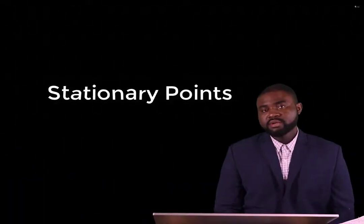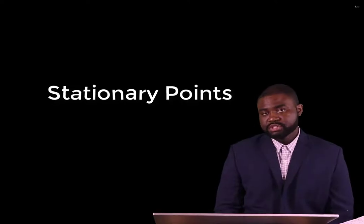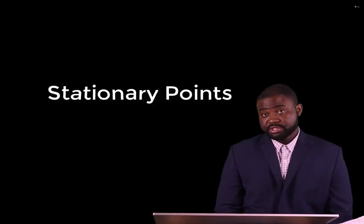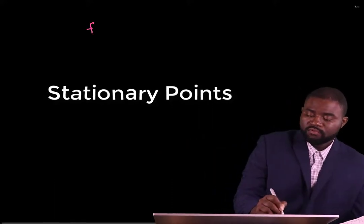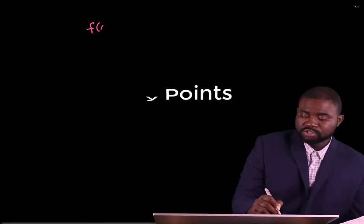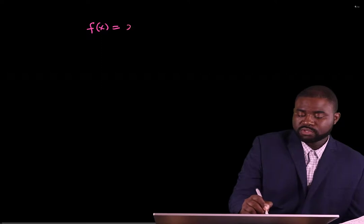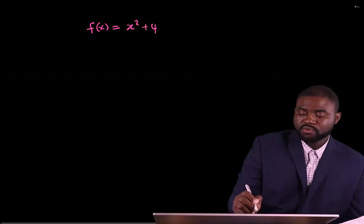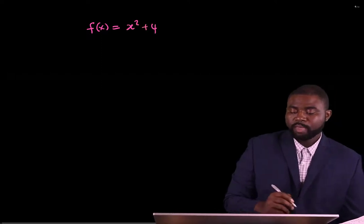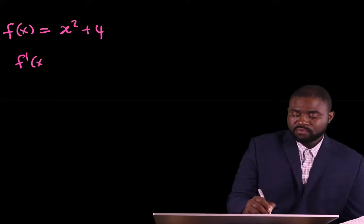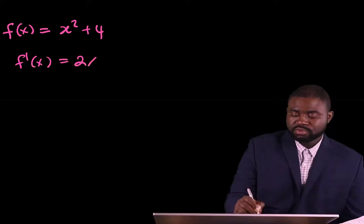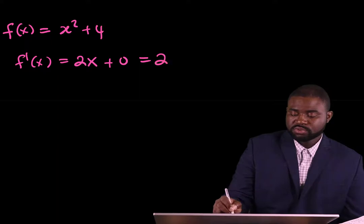Remember, differentiation tells us how the slope of a graph changes. For example, if we have a function which is equal to x squared plus 4, then f prime of x is just going to be equal to 2x plus 0, which is 2x.